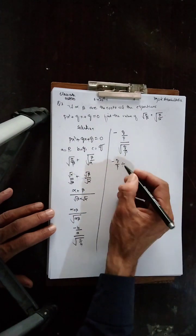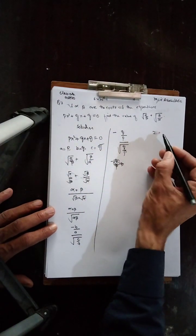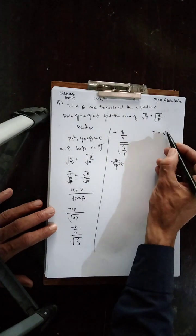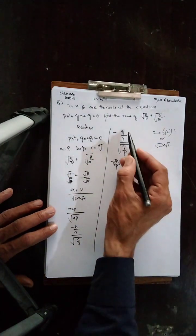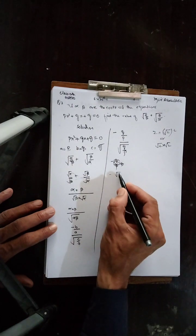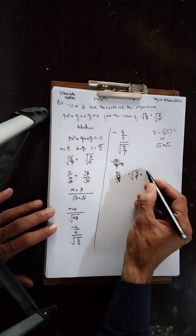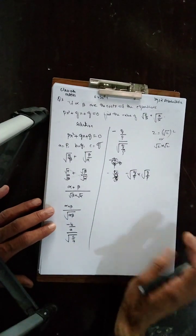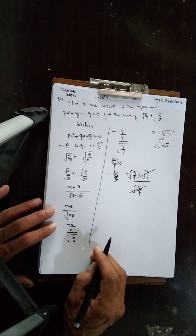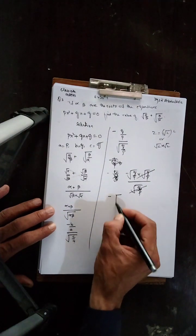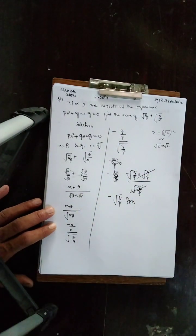یاد رہے: اگر 2 کو radical میں رکھنا ہو تو √(2²) لکھیں گے۔ اسی طرح −q/p کو radical میں رکھنے کے لیے √(q/p) × √(q/p) لکھیں گے۔ Divide میں already √(q/p) ہے تو ایک radical سے ایک radical cancel ہوگا اور answer آئے گا: −√(q/p)۔